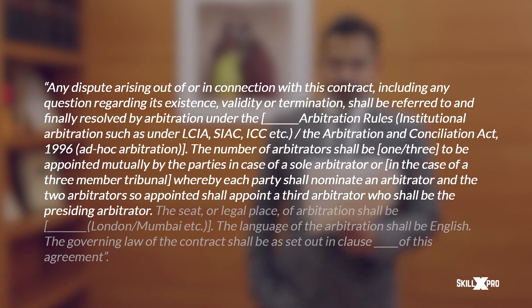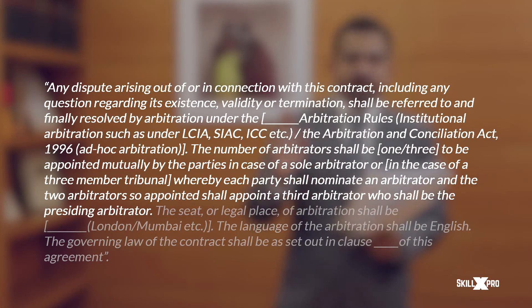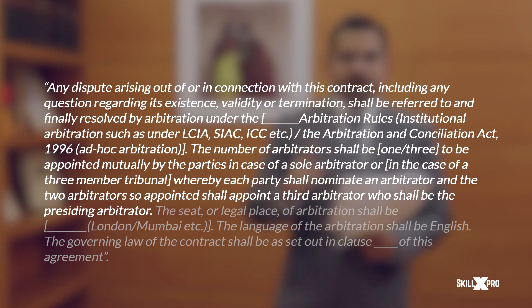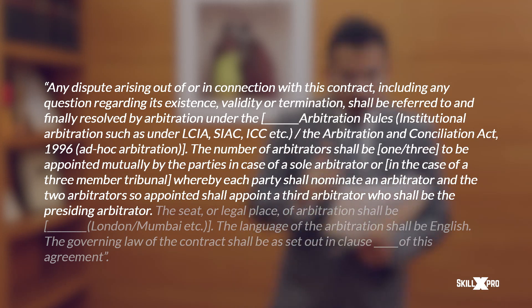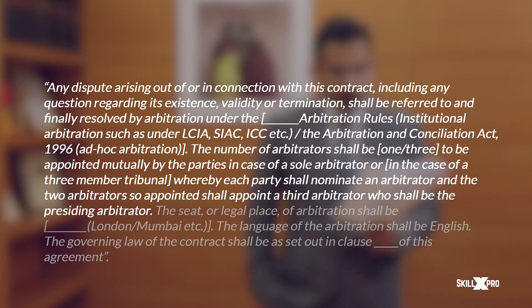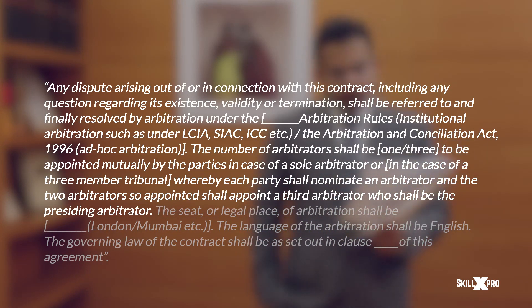So either you appoint a sole arbitrator or you say the arbitral tribunal will consist of three arbitrators. In that case, one arbitrator is appointed by Party A, the other arbitrator is appointed by Party B, and the two arbitrators then appoint the third arbitrator. That covers one more angle: the number of arbitrators. Then the most vital part is the seat.